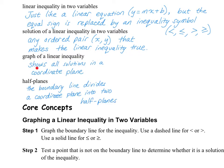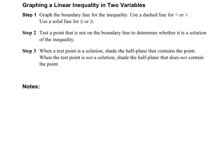The graph of the linear inequality shows all of the solutions in a coordinate plane, and it divides the plane into two half-planes. Here are the steps for graphing a linear inequality in two variables. Step one is to graph the boundary line for the inequality. You're going to use a dashed line if it's less than or greater than, and a solid line if it's less than or equal to or greater than or equal to. Step two is to test a point that is not on that boundary line and determine whether it is a solution or not a solution of the inequality. Step three: if the test point is a solution, shade towards that point. When it's not a solution, shade away from that point.